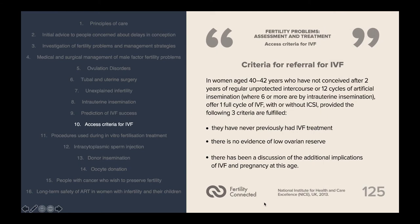For women aged 40 to 42 years who have not conceived after two years of regular unprotected intercourse or 12 cycles of artificial insemination where six or more are by IUI, offer one full cycle of IVF with or without ICSI, provided three criteria are fulfilled: they have never previously had IVF treatment; there is no evidence of low ovarian reserve; and there has been a discussion of the additional implications of IVF and pregnancy at this age.